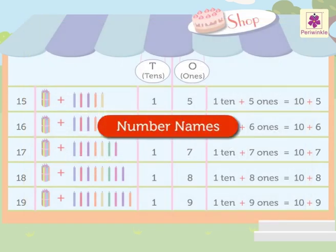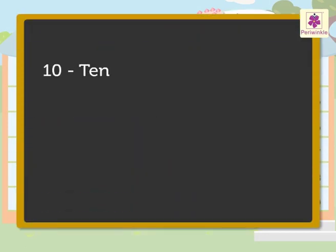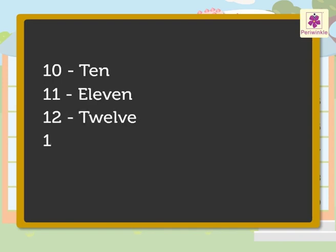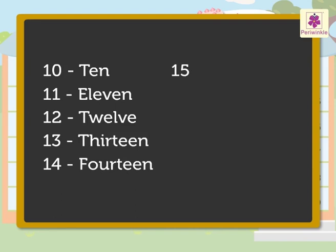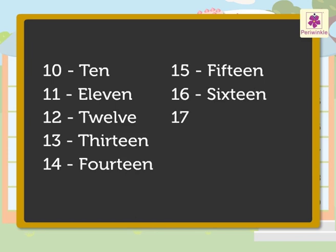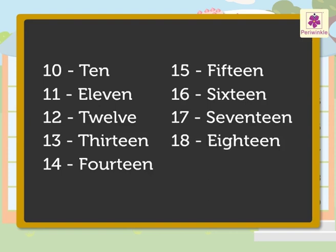Now let's study the number names: one, zero — ten. One, one — eleven. One, two — twelve. One, three — thirteen. One, four — fourteen. One, five — fifteen. One, six — sixteen. One, seven — seventeen. One, eight — eighteen. One, nine — nineteen.